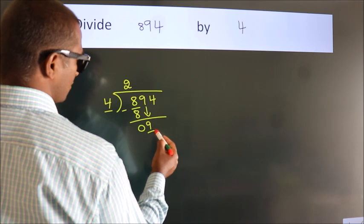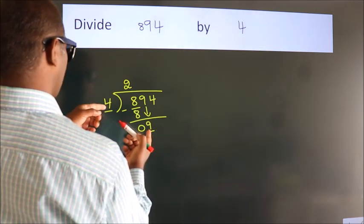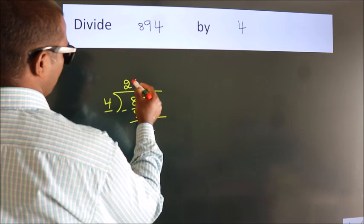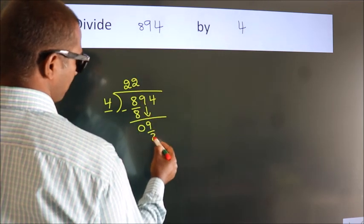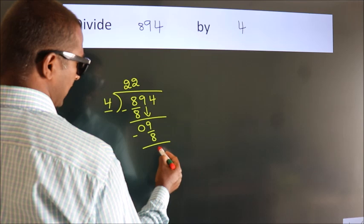So 9 down. So 9, a number close to 9 in the 4 table is 4 times 2 is 8. Now we subtract. We get 1.